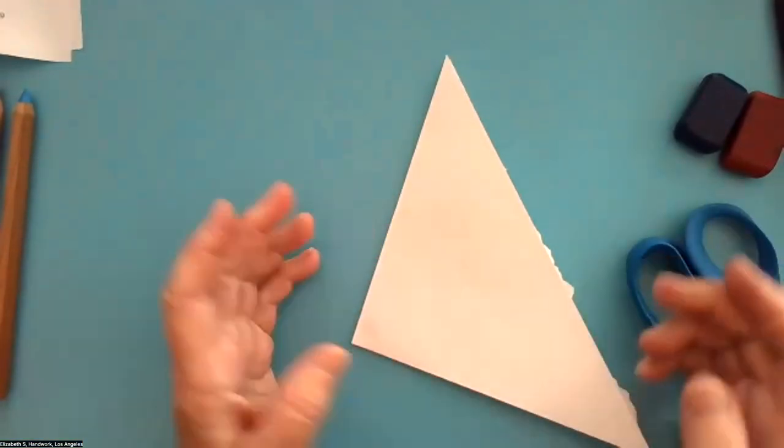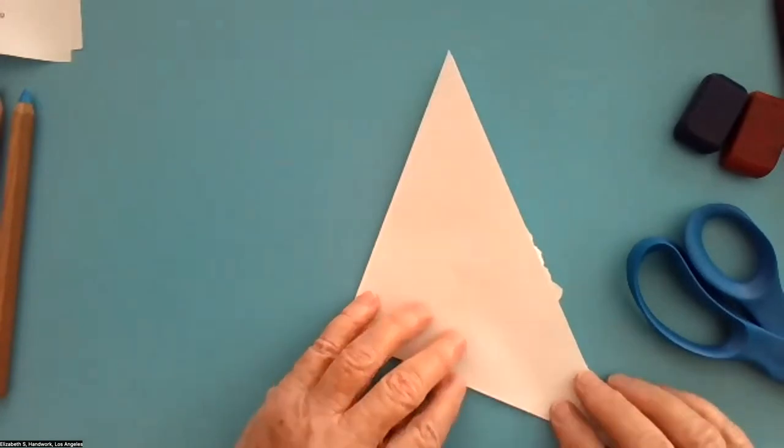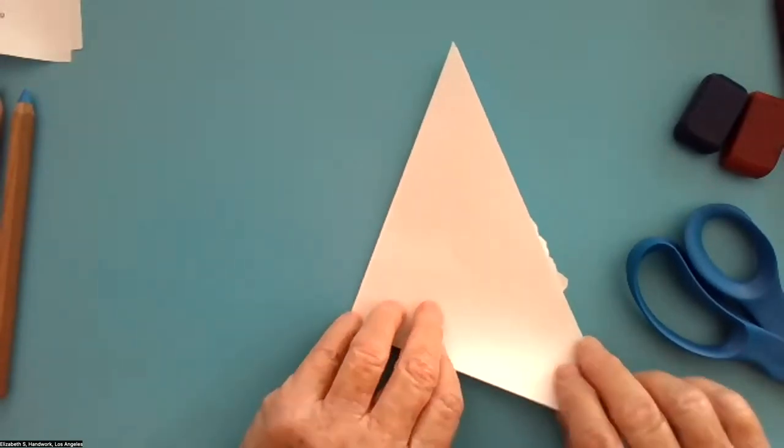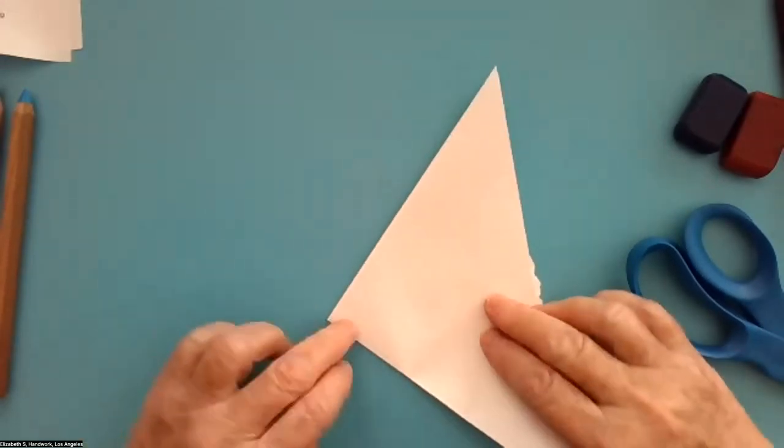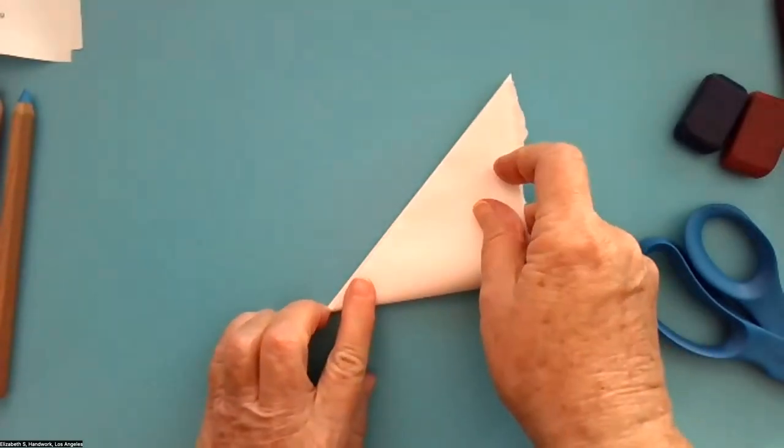So I started with a square. I folded it in half. I folded it in half again. I'm going to make one more fold in half again. So here's the point where all the folds meet and I'm going to fold it over like this.